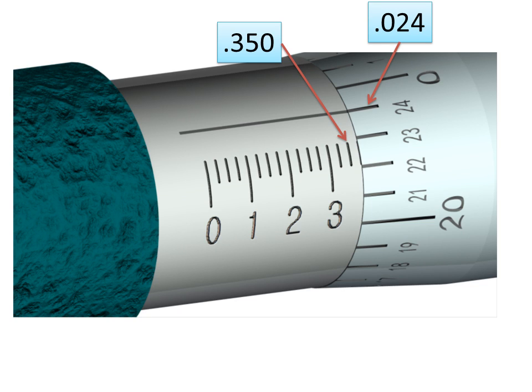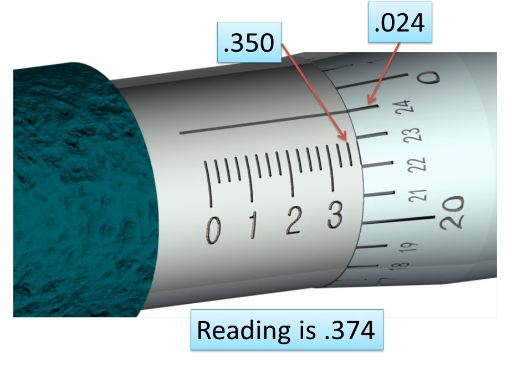So the reading of this micrometer is 0.350 plus 0.024. Think of it as adding three hundred fifty and twenty-four. You get a reading of 0.374.